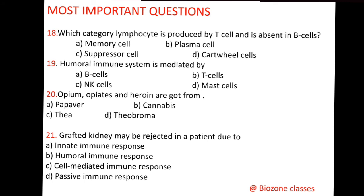Question number 21: A grafted kidney may be rejected in a patient due to — A. Innate immune response, B. Humoral immune response, C. Cell-mediated immune response, D. Passive immune response. The correct option is C, cell-mediated immune response. Cell-mediated response has the property to differentiate between self and non-self cells, and therefore immediately rejects any grafted organ.